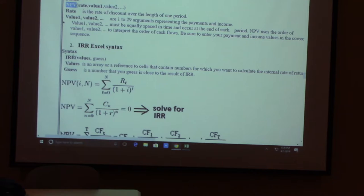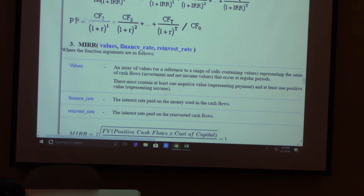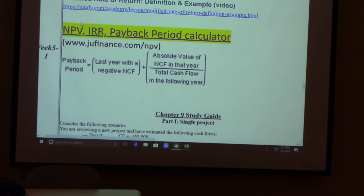NPV also has a function in Excel. You can also do MIRR and PI — profitable index. There's no Excel function for PI, but it's not too difficult. Payback period you have to calculate by hand. Or you can use the calculator on the website — we're using NPV, IRR, and Payback in this case.